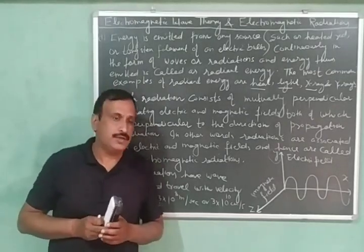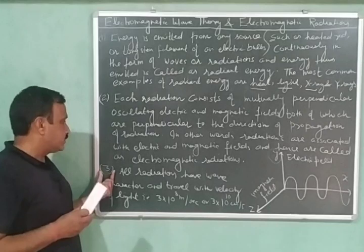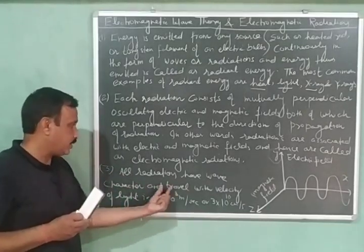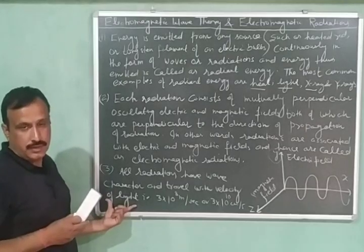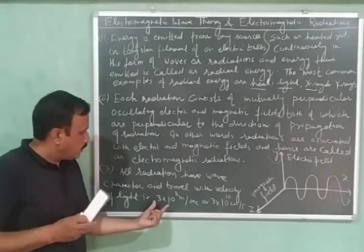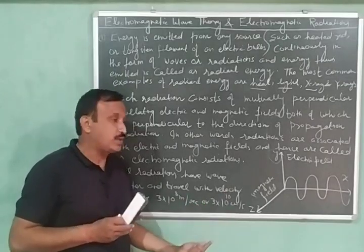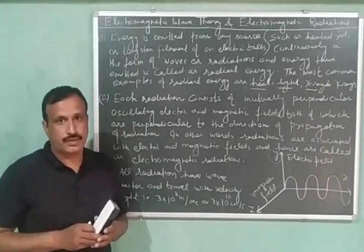This was the second postulate. And the third postulate is that all radiations have wave character and travel with the velocity of light. And the velocity of light is 3 into 10 raised to power 8 meter per second or 3 into 10 raised to power 10 centimeter per second.